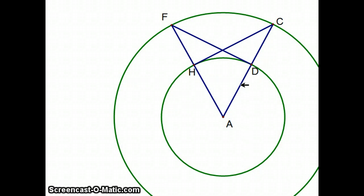Now, AD is congruent to AH because those are both radii of the small circle A. Whereas, AC and AF are congruent because those are both radii of the bigger circle, the one that is center A and goes through point C. And angle FAC is shared by both triangles.